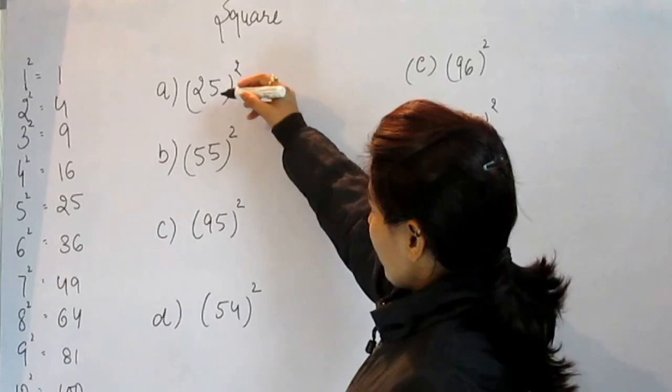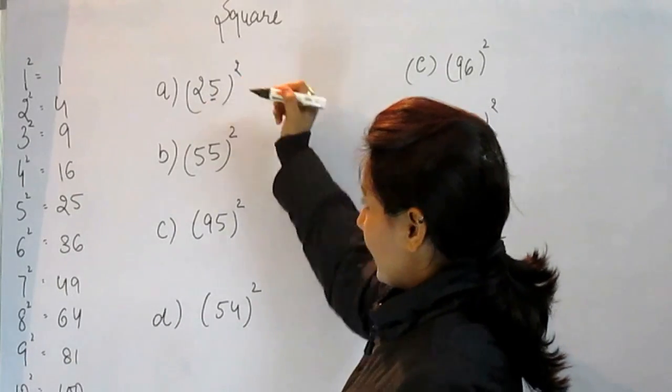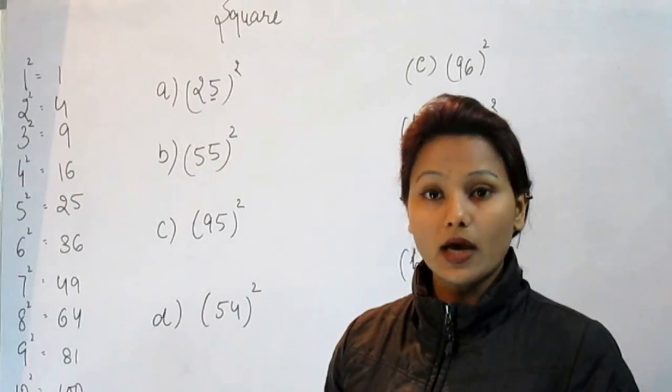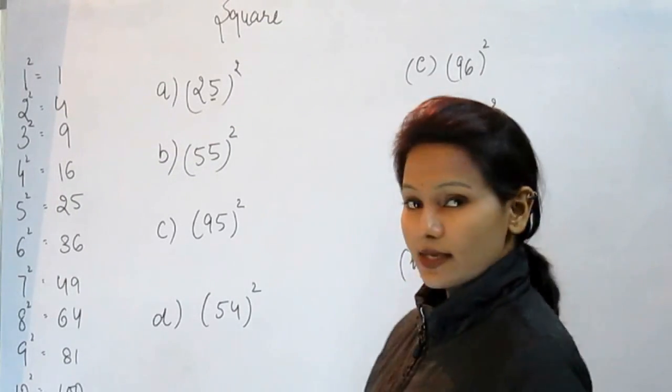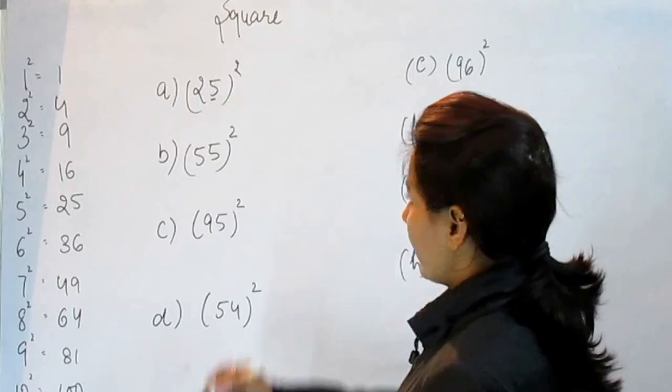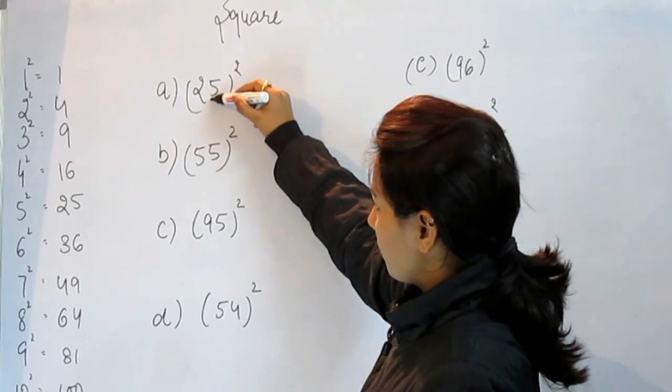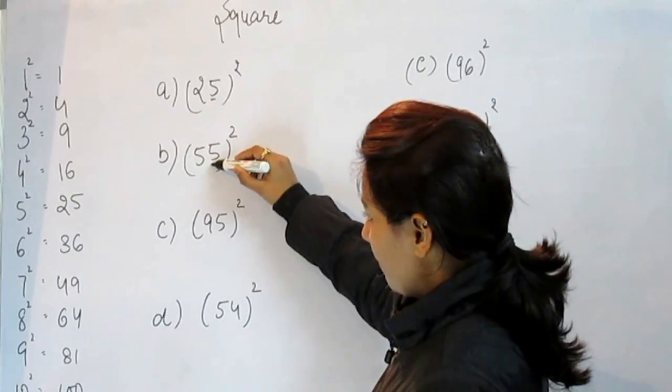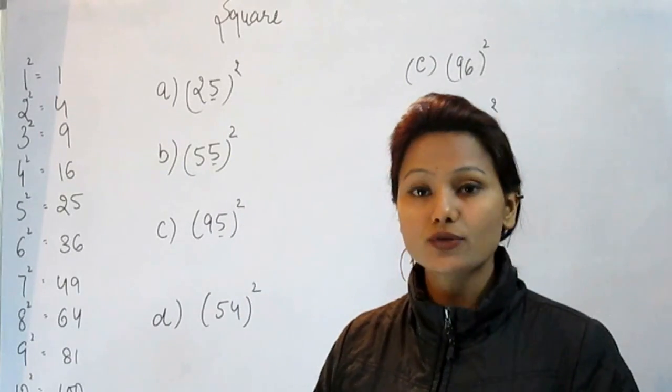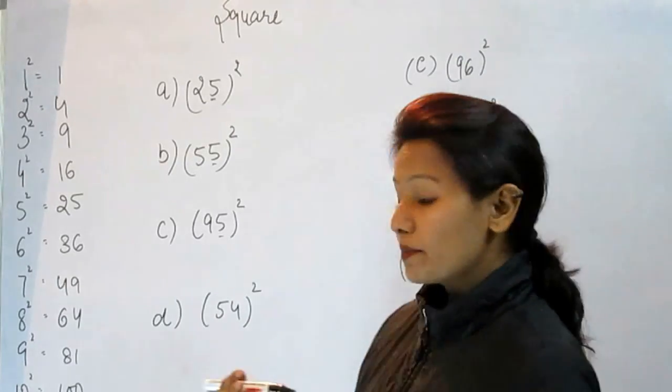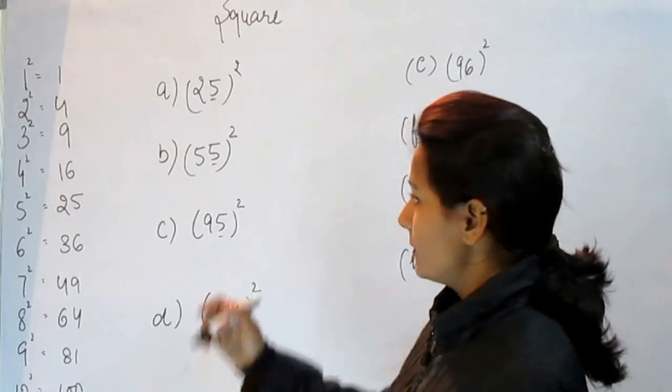The number which contains 5 at the end, that case is very special. Like 95 has 5 at the end, 55 has 5 at the end, and 25 has 5 at the end. So what is special in this case?